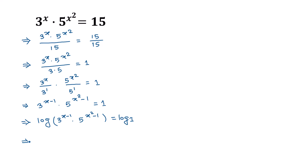Applying the logarithm formula — log(a times b) equals log a plus log b — we can write this as log of 3 to the power (x minus 1) plus log of 5 to the power (x squared minus 1), which is equal to log of 1, and log of 1 is 0.